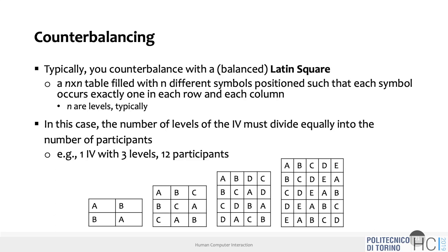When counterbalancing, the number of levels must divide equally into the number of participants. If you have conditions A and B, the first participant gets A-then-B and the second gets B-then-A — you should have at least four participants, not three, because three doesn't divide equally and you'd have an imbalance. So you need two, four, six, eight — a number divisible by two to maintain equal groups for each row of the table.